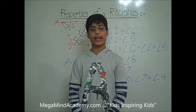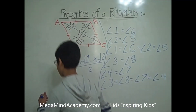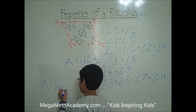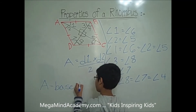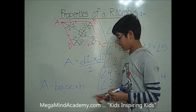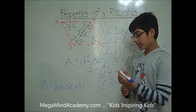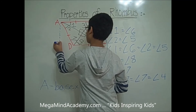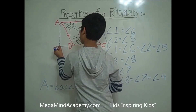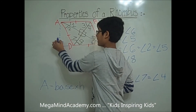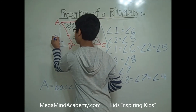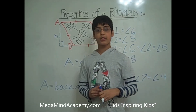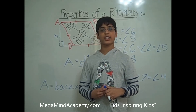Another way to find the area of this rhombus is area A equals base times height. H stands for height, and the height is always perpendicular to the base. This is the height, and DC is the base. Today we learned about properties of a rhombus. Thank you for watching this video.